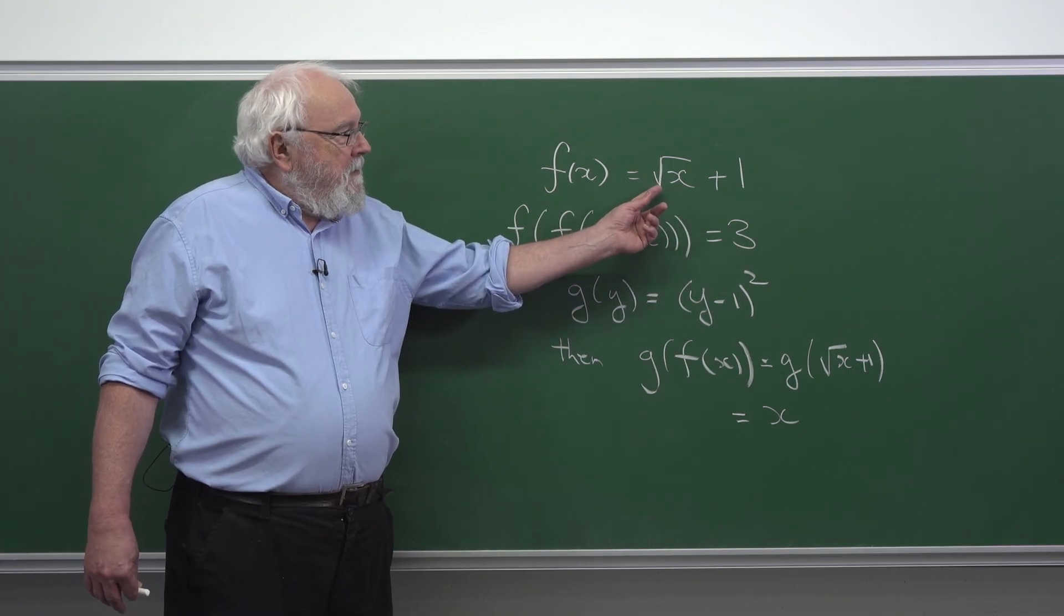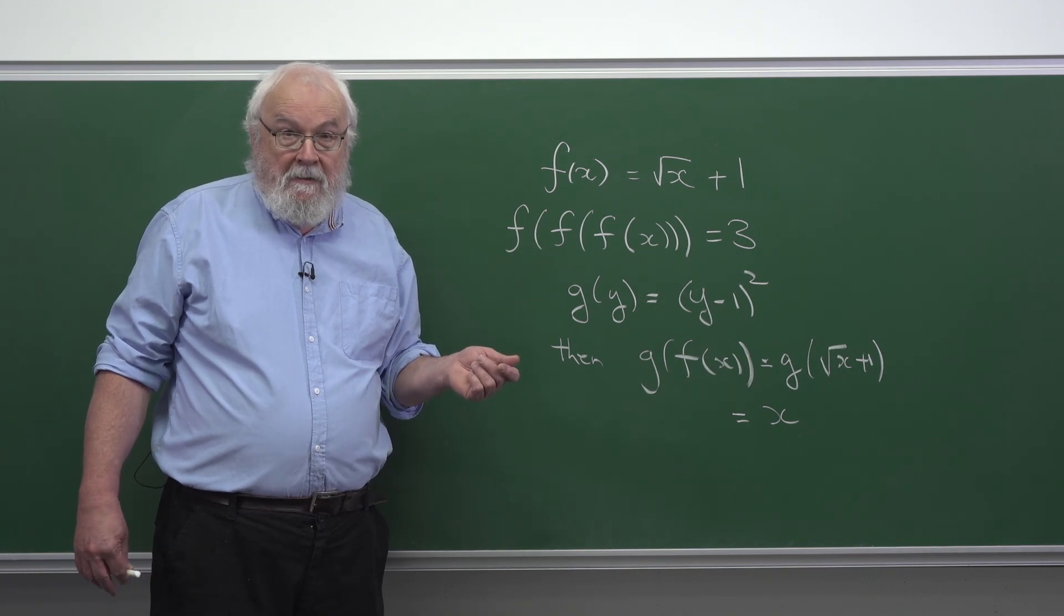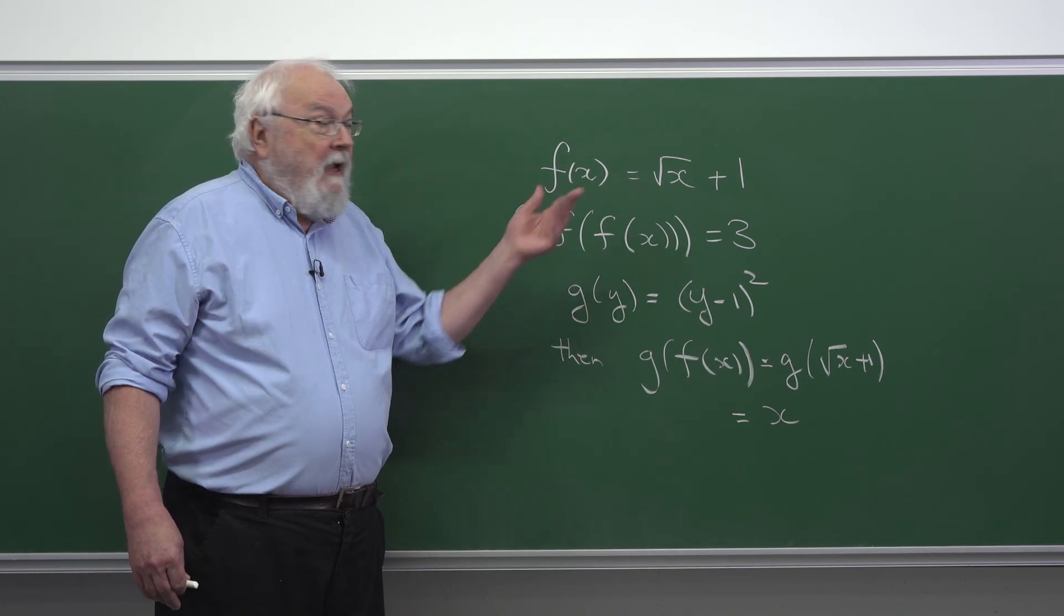Well, you would take the square root of x plus 1, you subtract 1 from it to give you the square root of x, and then you square it and you recover x.